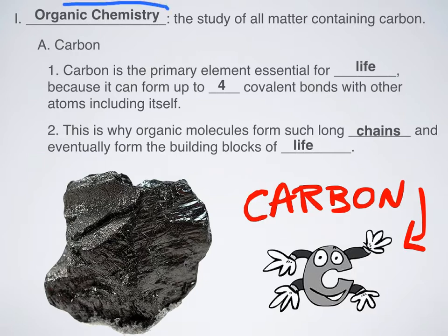So what is organic chemistry? It's the study of all matter containing carbon. That's kind of like a basic definition. There are some carbon-containing compounds that aren't considered organic, but again that's like a rarity. So anytime you see a carbon-containing compound, it's most likely going to be considered organic.